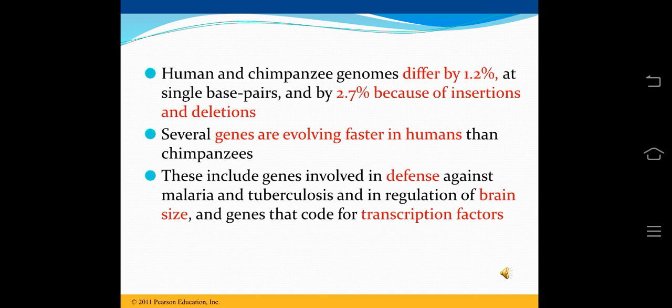Evolution of humans: humans and chimpanzees' genomes differ by 1.1–1.2% at single base pairs and 2.7% because of insertions and deletions. Several genes have evolved faster in humans than chimpanzees, including genes involved in defense against malaria and tuberculosis, regulation of brain size, and genes that code for transcription factors.